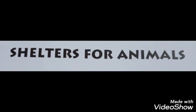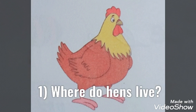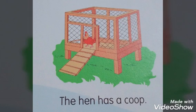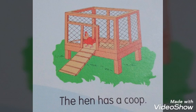Some animals make their own home, but domesticated animals — koi animals ko haam ghar pe paalthu karte na — we make homes for them. Like dogs, cats, hen, like that. For them we make homes. See, this is a hen. Hen gives us eggs. Now, where do hens live? Hens live in a coop. Hen ki ghar ki naam kya hai? Coop. Hens live in a coop. Where do hens live? Hens live in a coop.